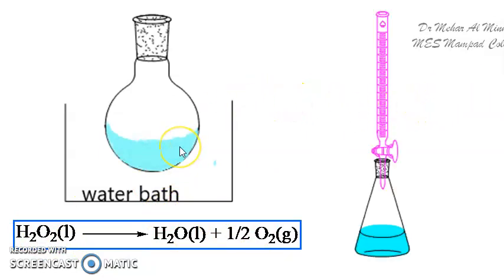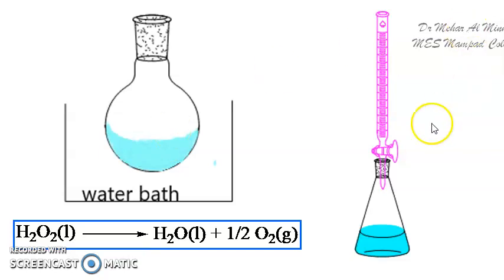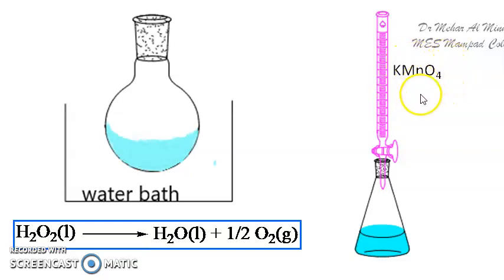We take equal volumes of the reaction mixture at regular intervals of time. Initially, before the reaction starts — as soon as we have placed the hydrogen peroxide in the reaction pot — we take a specific amount, put it in a conical flask, and titrate it against KMnO₄. The volume of KMnO₄ consumed at this initial titration (V₀) is proportional to the initial concentration of hydrogen peroxide, C₀.